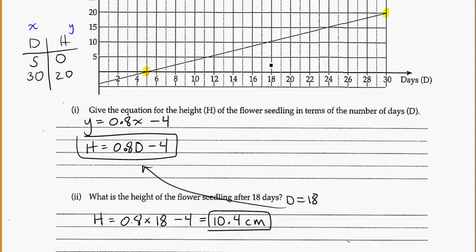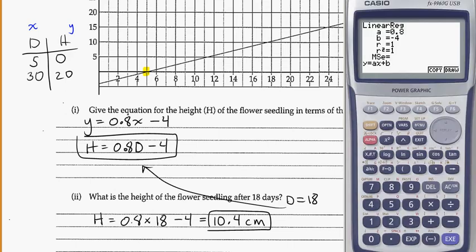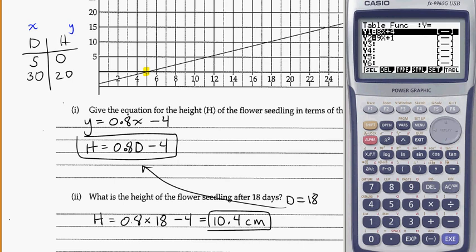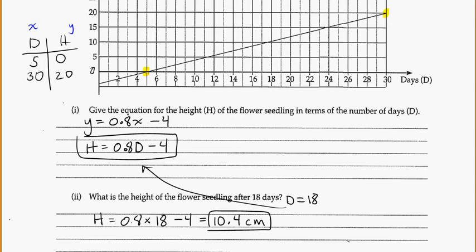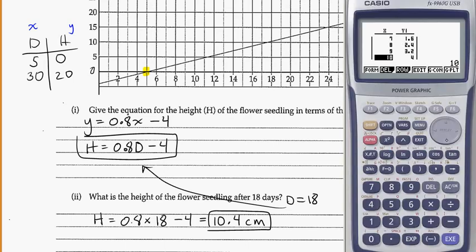So our answer is 10.4 centimeters. And that looks kind of alright. 18 days, just above the 10. But again, if you're not sure, you can double check this, putting the equation into table. So we'll delete these two equations. And we'll put in the equation that we want, 0.8x. Again, always just use x as your variable. Keeps it simple. And show our table. So we see negative values at the start, which we would expect because it's below the 0 on that axis. And it starts to increase. And we come to 18 days, 10.4, just like we found. So that checks out.